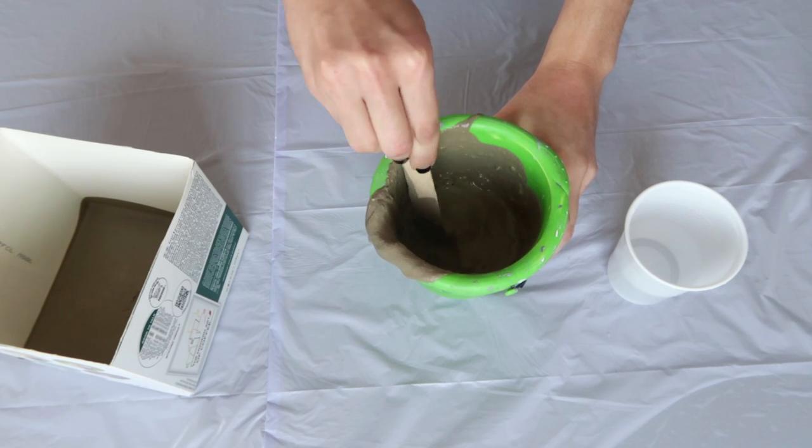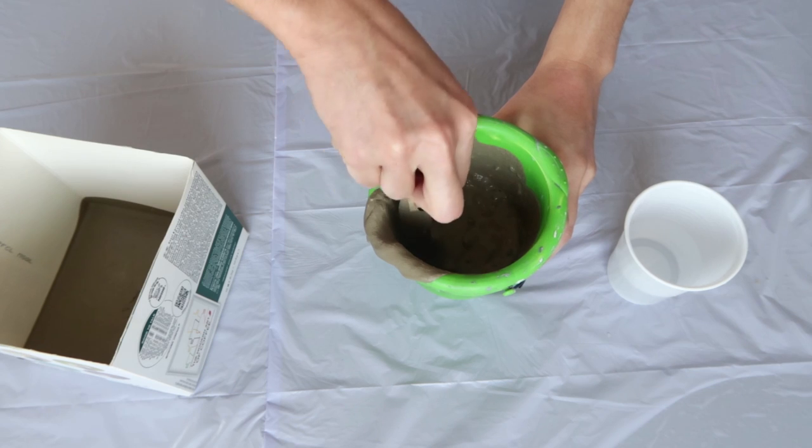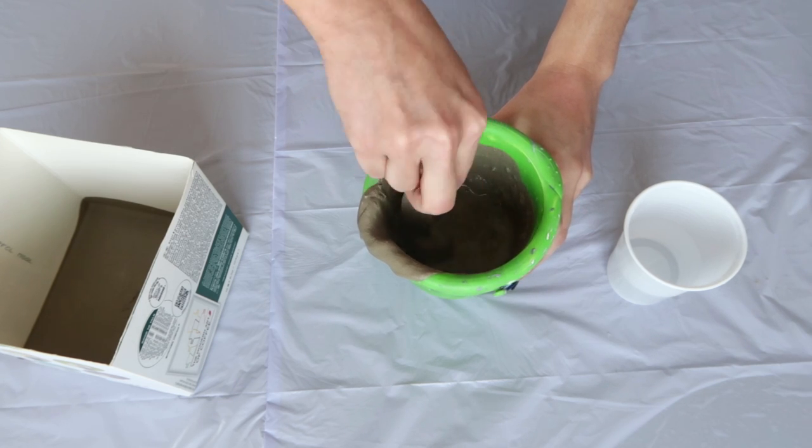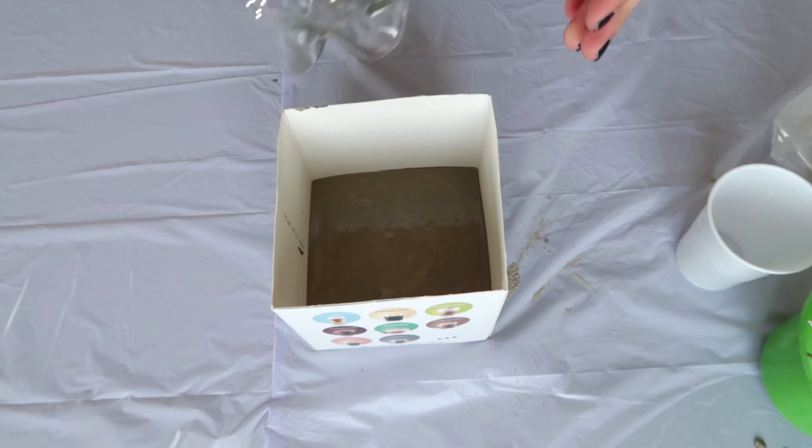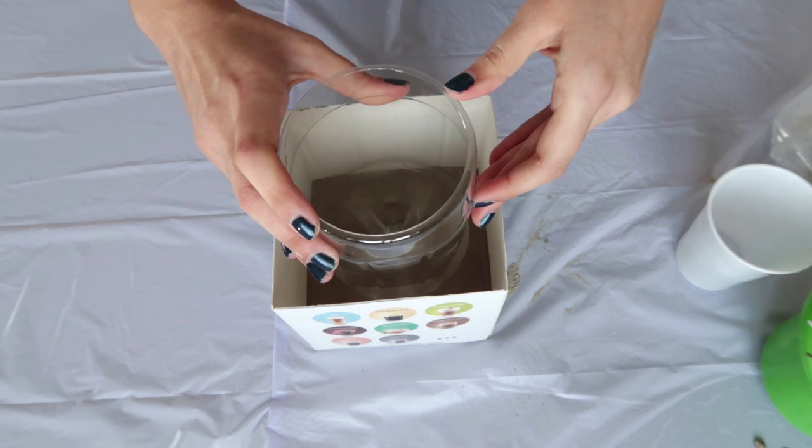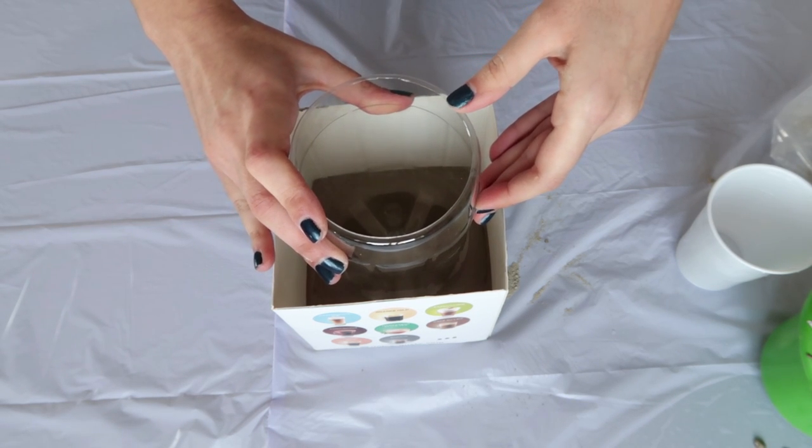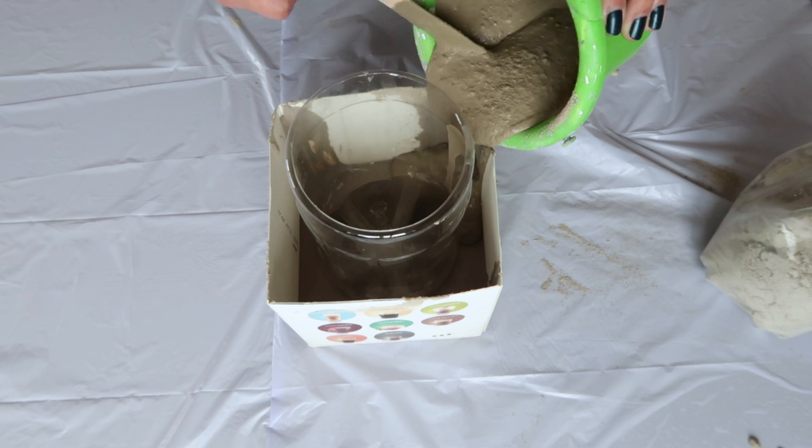After that, I made another batch of cement to fill the rest of the box. After I placed the bottle inside, I realized the cement was not nearly enough so I made a bit more and poured it around.